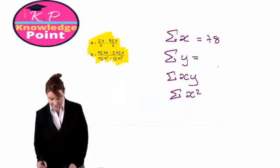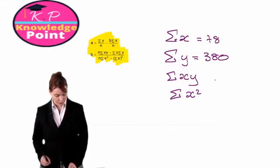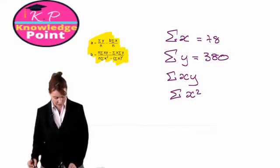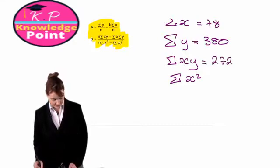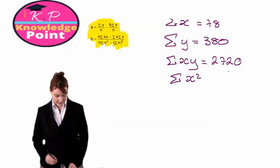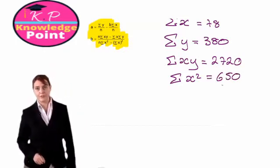The sum of our y values, or our sales figures, comes to 380. If you do your calculation for the sum of our xy values, you should get 2720. And finally, the sum of our x squareds come to 650.